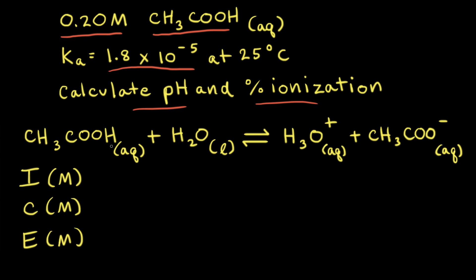First, we need to write out the balanced equation showing the ionization of acetic acid. Acetic acid reacts with water to form the hydronium ion, H₃O⁺, and acetate, which is the conjugate base to acetic acid. Because acetic acid is a weak acid, it only partially ionizes.